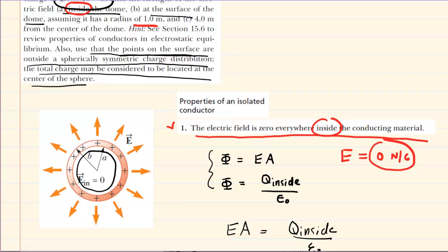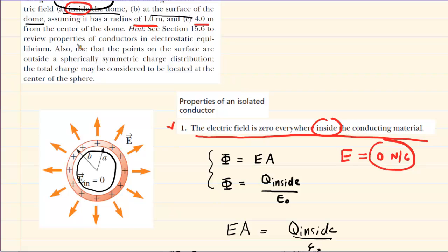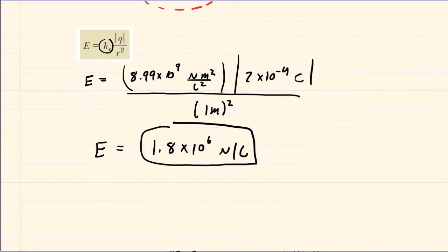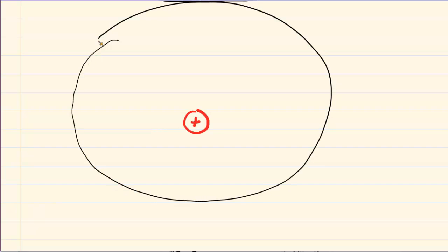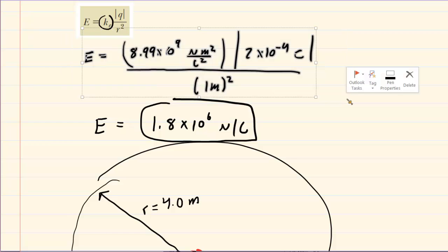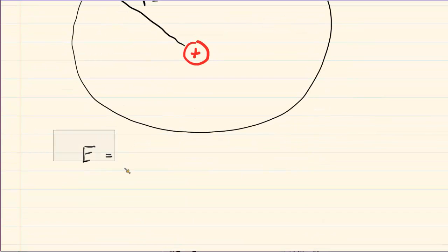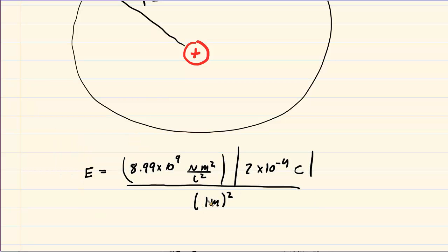In part C, we calculate the electric field at a distance of 4 meters from the center of the dome. We use the same assumption that all positive charge is located at a single central point, but this time the distance R is 4 meters instead of 1 meter. The setup is the same as part B — we use the point charge electric field equation with the same Coulomb constant and charge, but replace 1 meter with 4 meters. Processing this calculation gives us about 1.1 times 10 to the power of 5 Newtons per Coulomb, which is the electric field for part C.